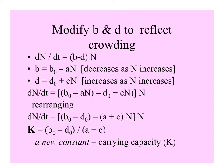So that dN/dT is equal to the birth rate modified by the crowding factor, minus the death rate, which is increased by the crowding factor times the population size.